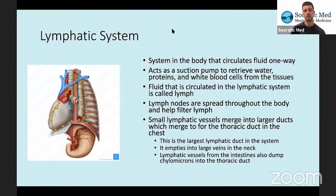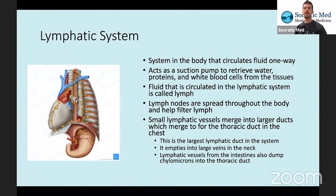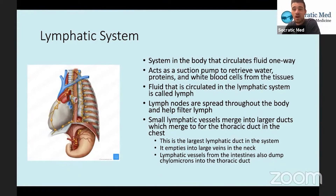The lymphatic system, really quickly, is just the system in the body that circulates fluid. It is a one-way system, just like your circulatory system. It acts as a suction pump to retrieve water, proteins, and white blood cells from tissues. Like we discussed, when histamine is released it causes capillaries to leak, so white blood cells and proteins leak out into the tissues and water follows them. The lymphatic system drains the cells and dumps the fluid back into the circulatory system. It's basically just smooth muscle contractions and valves — there's no heart-like pump driving it.